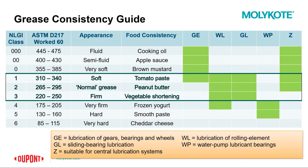Here we have a grease consistency guide. It shows the sweet spot where Mollie Coat plays — the 1s, 2s, and 3s — though we do have some products that are NLGI 0 or double-0 and single-0. This chart aligns consistency grades with specific applications and uses food consistency as a reference: NLGI 1 would be something like tomato paste, NLGI 2 more like peanut butter. As the NLGI number goes up, we get into thicker or more firm types of lubricants.